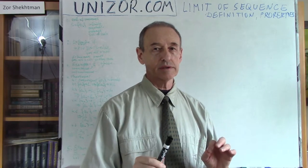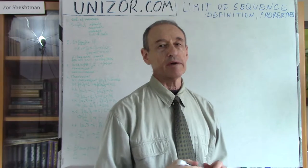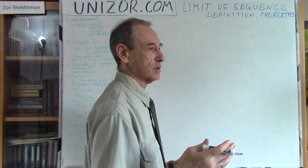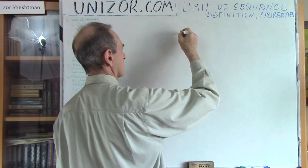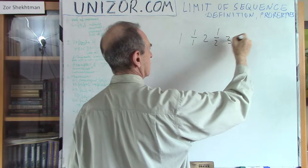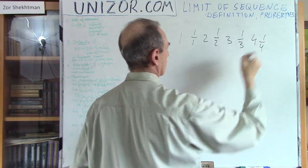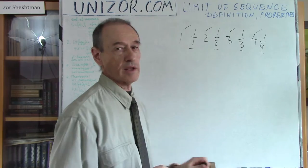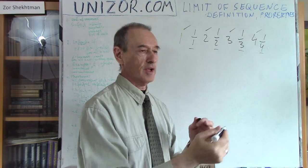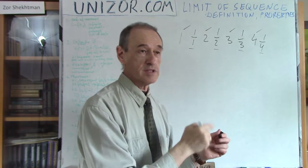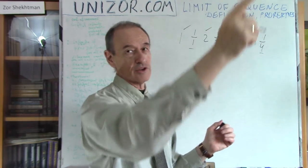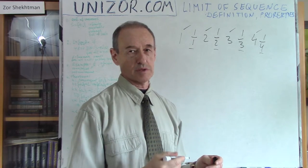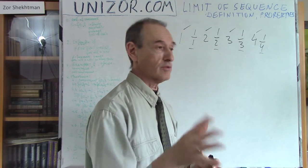A slightly more complicated example of a non-convergent sequence: 1, 1/1, 2, 1/2, 3, 1/3, 4, 1/4, and so on. The 1/N members go toward zero while the integer members keep infinitely increasing. This sequence goes toward zero, then to a large number, then closer to zero, then an even larger number. So it is also non-convergent, but in a more complicated way than the simple -1 and 1 alternating example. Examples of non-convergence can be very sophisticated.